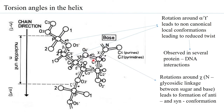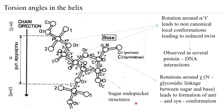If there is a rotation around the N-glycosidic bond — meaning the torsion angle chi changes — you can have what is called the anti and syn conformation. Likewise, any change happening within the deoxyribose leads to what is called the sugar endopucker structure. You can have a C3' exopucker, C3' endopucker, C2' endopucker, or C2' exopucker. So sugar conformations can also change depending on movement around bonds within the sugar itself.